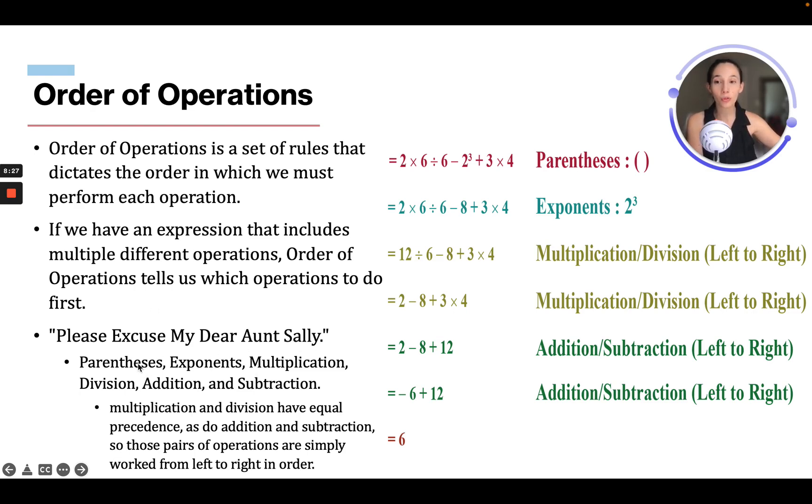So this is parentheses, exponents, multiplication, division, addition, and subtraction. Multiplication and division are equal precedence, as do addition and subtraction. So those pairs of operations are simply worked from left to right. So what that means is addition and subtraction you just work from left to right, and multiplication and division you work from left to right. But you have to do multiplication and division before addition and subtraction, and parentheses always comes first.